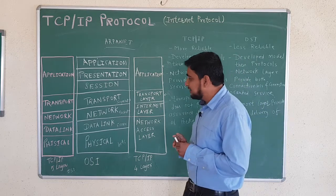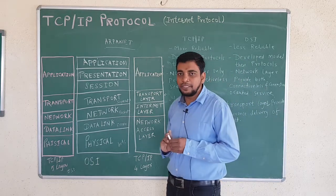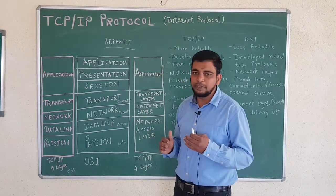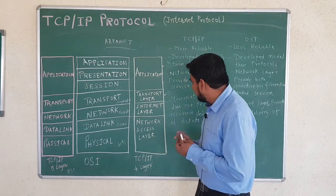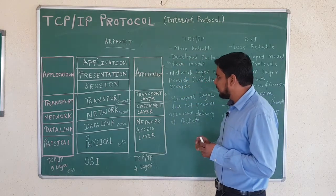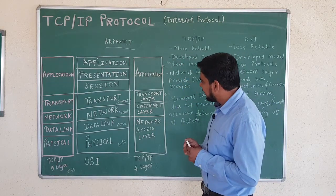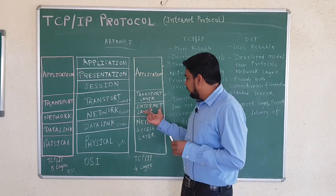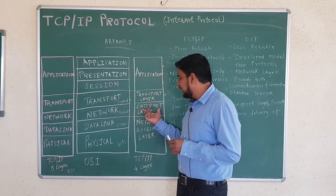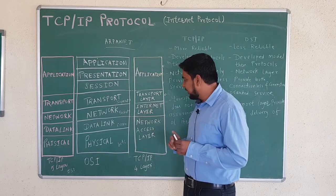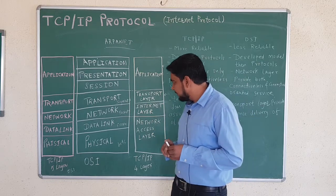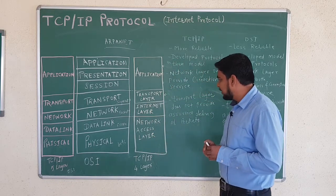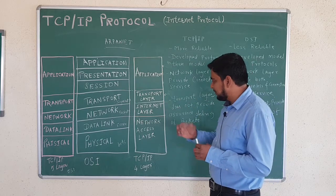In the transport layer, connection-oriented and connectionless services are provided through TCP and UDP respectively. The choice of which connection to establish is the responsibility of the transport layer. In the internet layer, IP addressing is handled, and the layer is responsible for source-to-destination transmission through IP addresses.